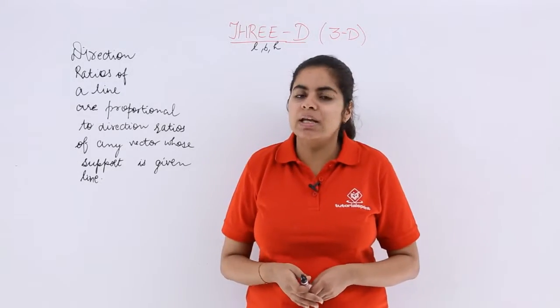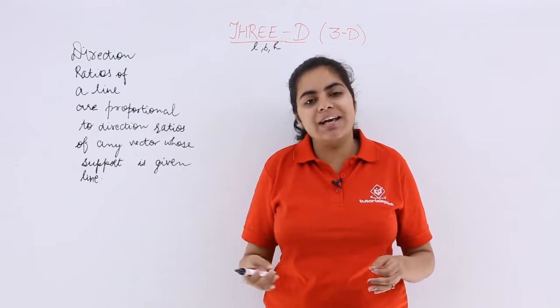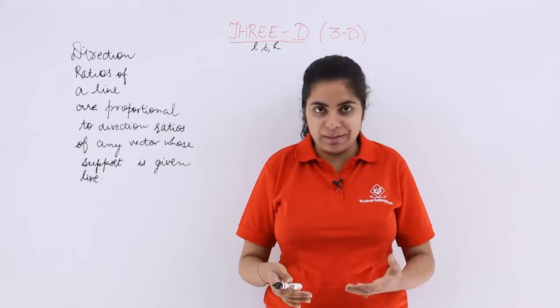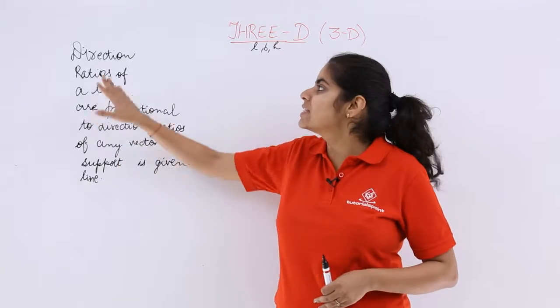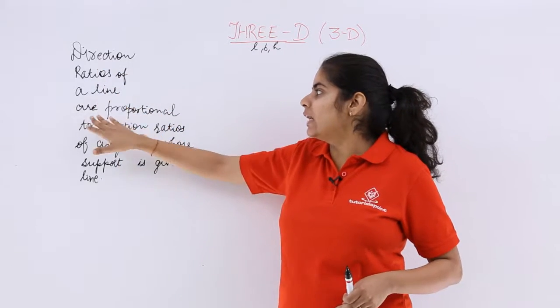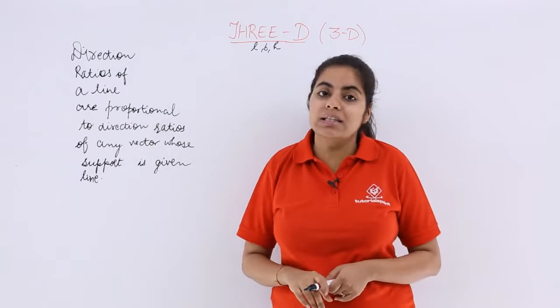Now I have written something which is the definition of direction ratios. You know what are direction cosines and direction ratios from the chapter of vectors, but this is the formal definition. Let's read this out. It says direction ratios of a line are proportional to direction ratios of any vector whose support is the given line.